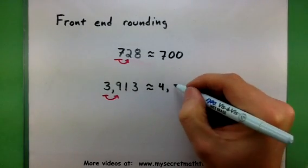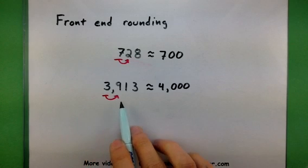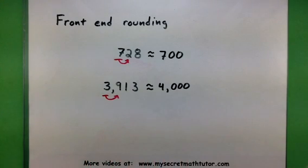And just like before, we'll make the rest of those numbers a 0. So 3,913 is approximately 4,000. And there you go. That's front-end rounding. If you'd like to see some more videos, please visit MySecretMathTutor.com.